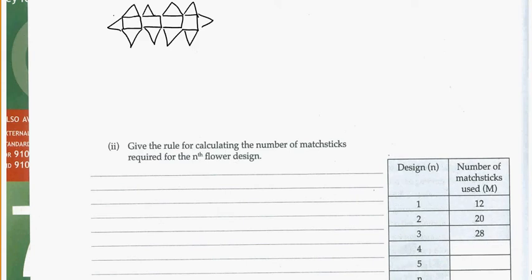Give the rule for calculating the number of matchsticks required for the nth flower design. So remember, here we need to actually find a rule, so we're going to use STAT on our calculators. And they've given us a table, so one of the first things that we can check is, does this go up in a linear pattern? So we've got 12 to 20, that's a difference of 8, and 20 to 28, a difference of 8. And it looks like it will be a linear pattern. So let's go ahead and remind ourselves how to do this in the calculator.